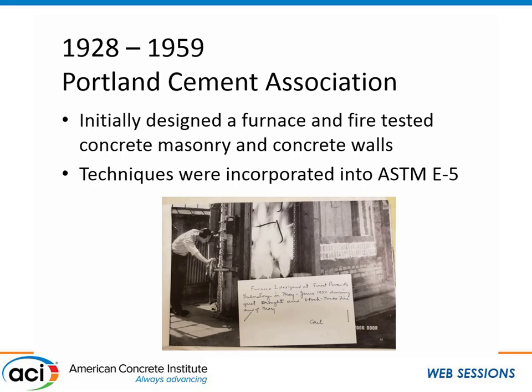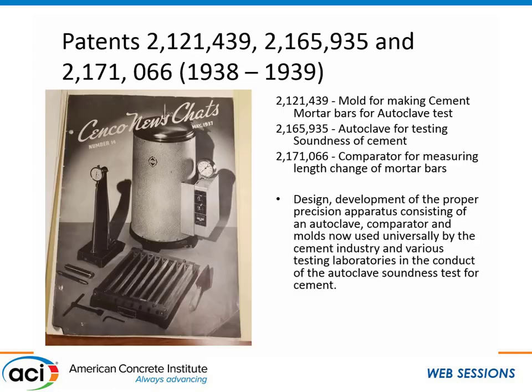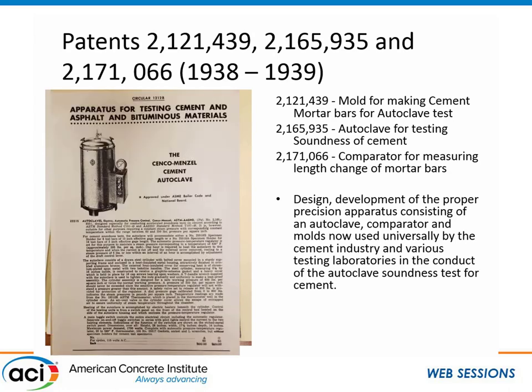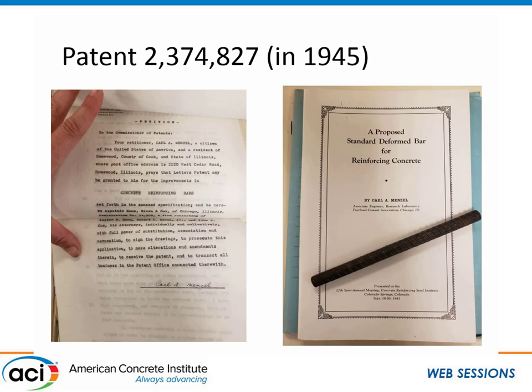In 1928, he applied and was accepted to work at the Portland Cement Association, where he first started doing tests on materials under fire — specifically concrete masonry and concrete walls. Then he got involved studying cement, and that's when his next three patents came around. He developed an autoclave system for testing the soundness of cement. Right after he came up with this, a company called Senco developed the product, sold it, and many cement companies started using it to test their cement.